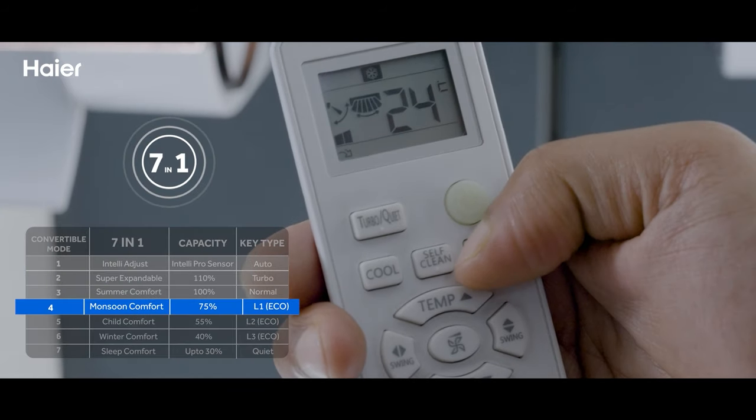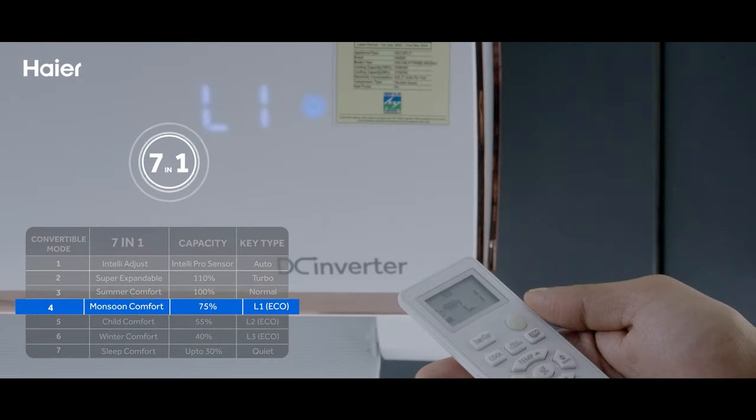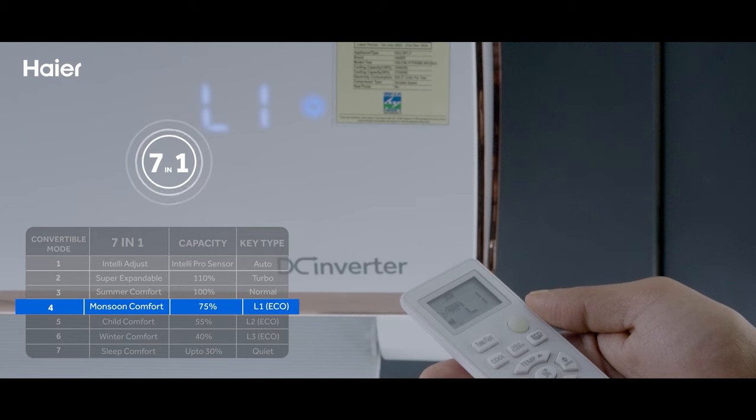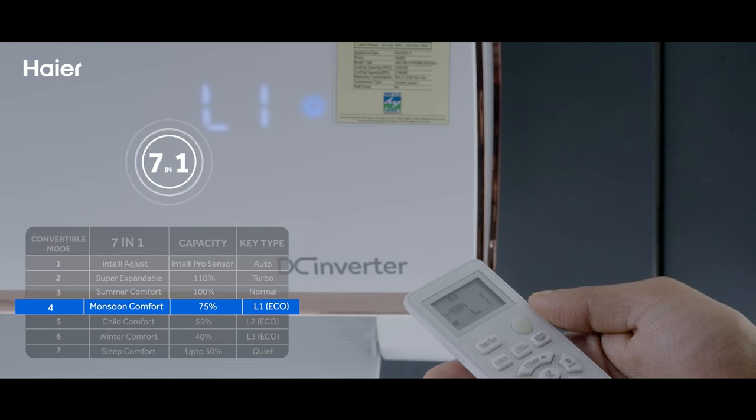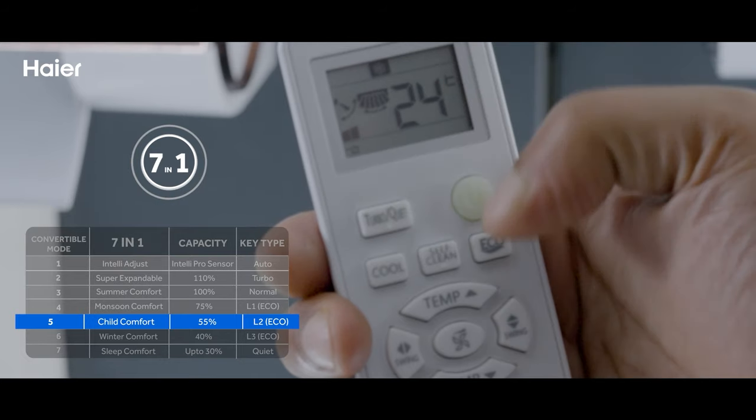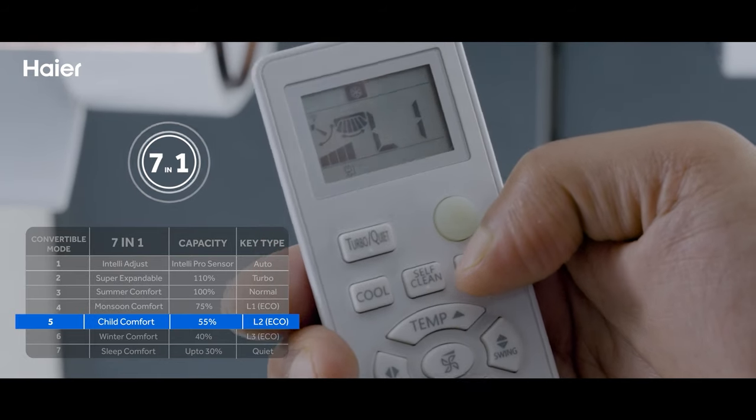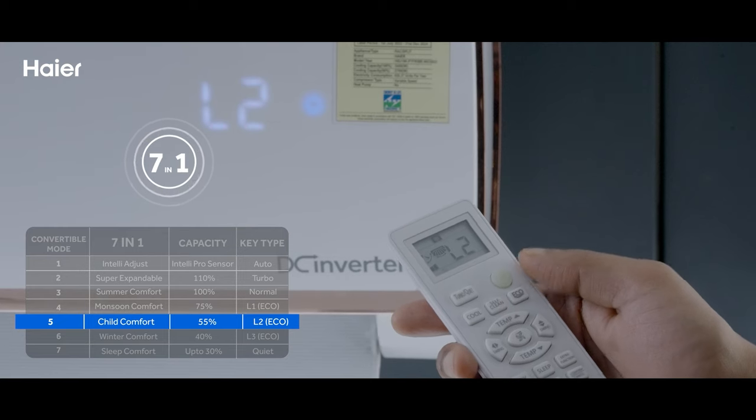Option 4: use monsoon comfort mode by pressing the eco key once. It will show L1 on the display and AC will run at 75% capacity. Option 5: use child comfort mode by pressing the eco key twice. It will show L2 on the display and AC will run at 55% capacity.